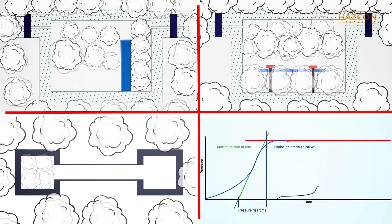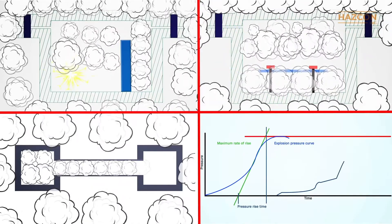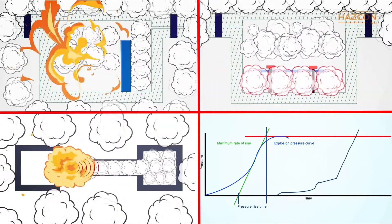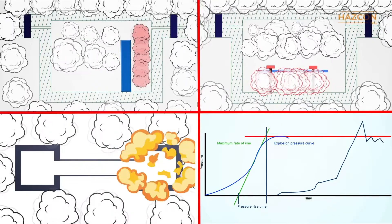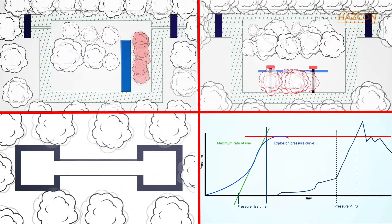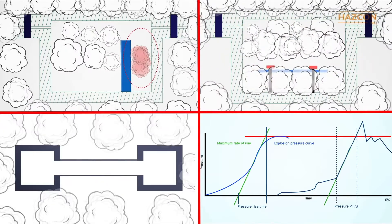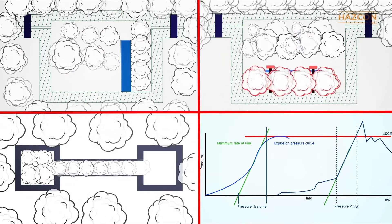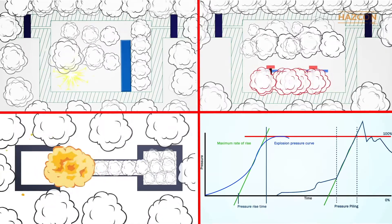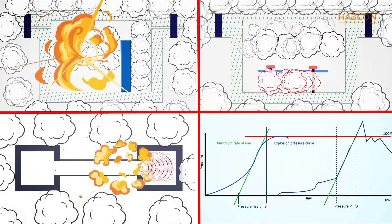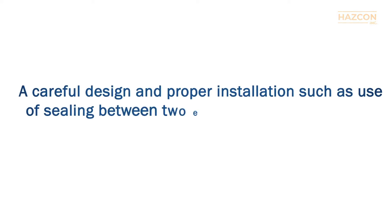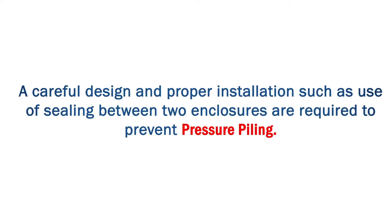In summary, we should remember that pressure piling results when gases become highly pressurized through compression, and when unburned gas pushed into a cavity becomes highly pressurized before being ignited. As a result, pressure piling leads to pressure that is higher than the expected peak pressure as a result of an explosion. Given such increased pressure, enclosures and piping systems might be unable to withstand the impact of an explosion. A careful design and proper installation, such as use of sealing between two enclosures, are required to prevent pressure piling.